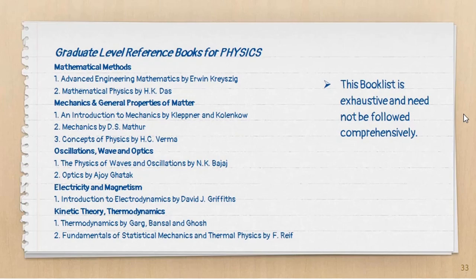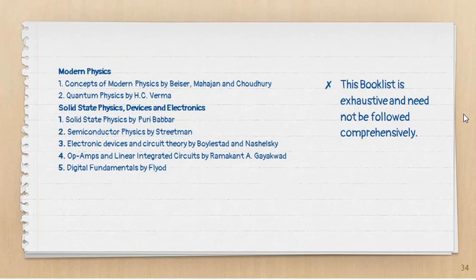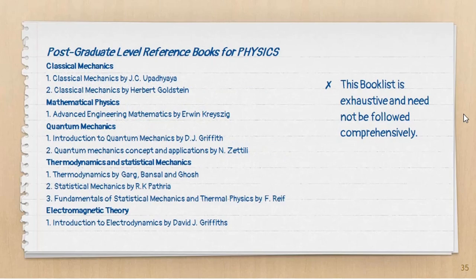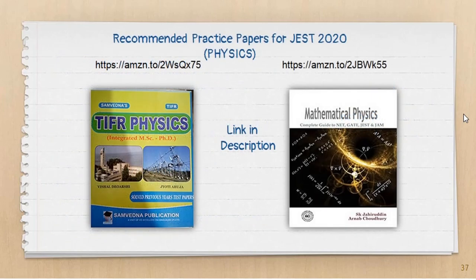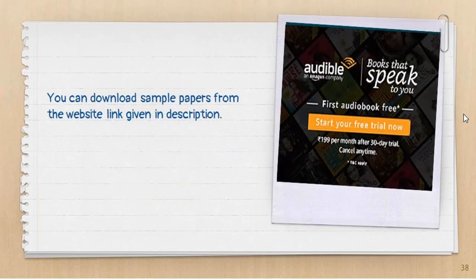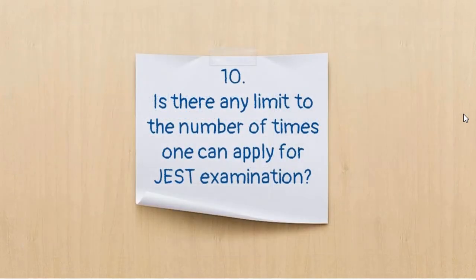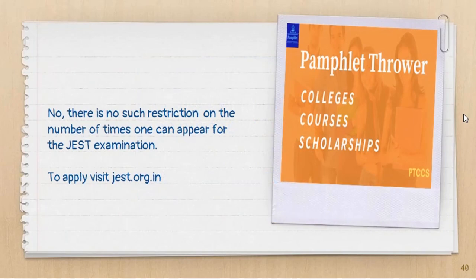If you want to strengthen your preparation for JEST 2020, here is a complete list of all books required in graduation as well as post-graduation in physics — they will give you an extra edge over others, though these books are not compulsory. Lastly, practice papers and sample papers are a must; you can get a few of them on the official website as well.